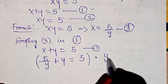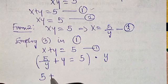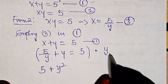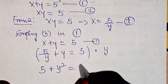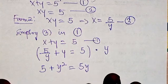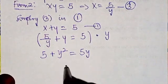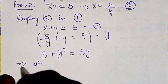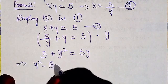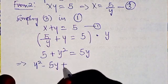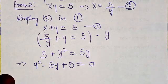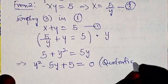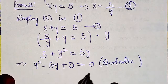Multiplying through by y: 5 times y over y gives us 5, the y cancels. Then y times y gives us y squared. Then 5 times y gives us 5y. Rearranging, we get y squared minus 5y plus 5 equals 0. This is a quadratic equation in terms of y.